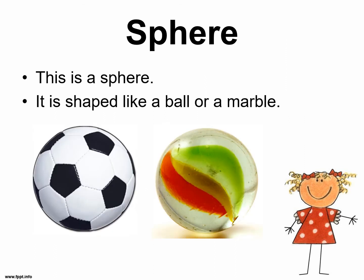Sphere. Please note that you are writing the notes from this slide, and you can either print or draw a sphere in your child's book. This is a sphere. It is shaped like a ball or a marble. So a sphere is an object that is round.